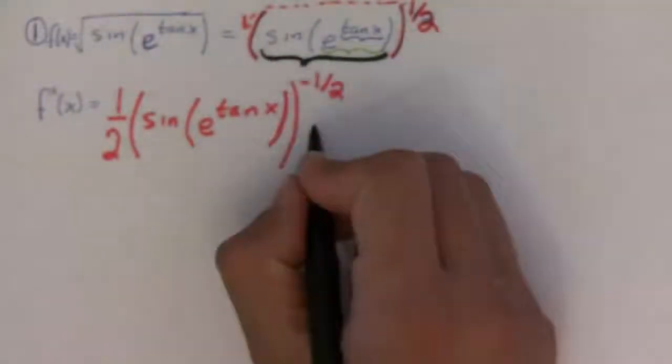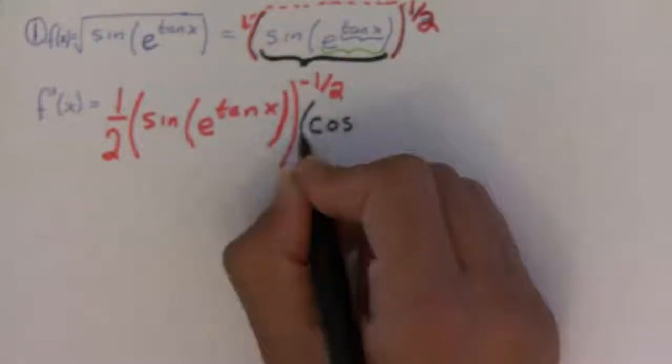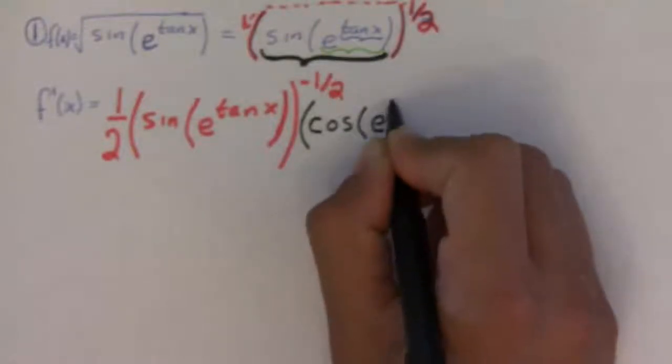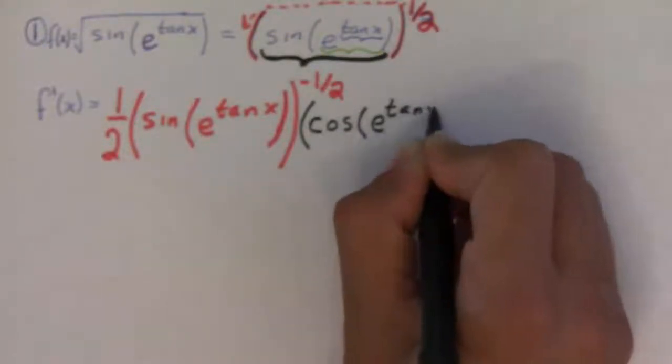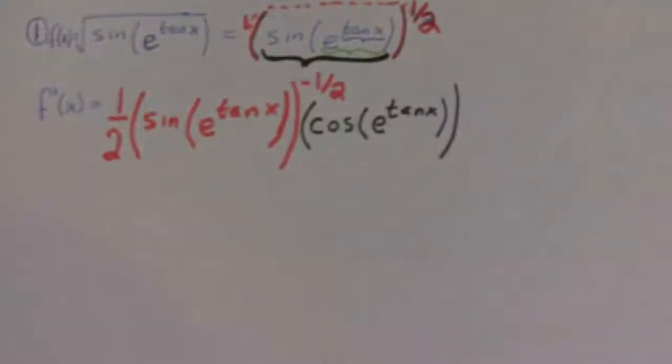And now, I'm going to get the derivative of the sine function. Well, the derivative of sine is cosine. Let me put parentheses here. Cosine of, and you leave the inside alone, as always.